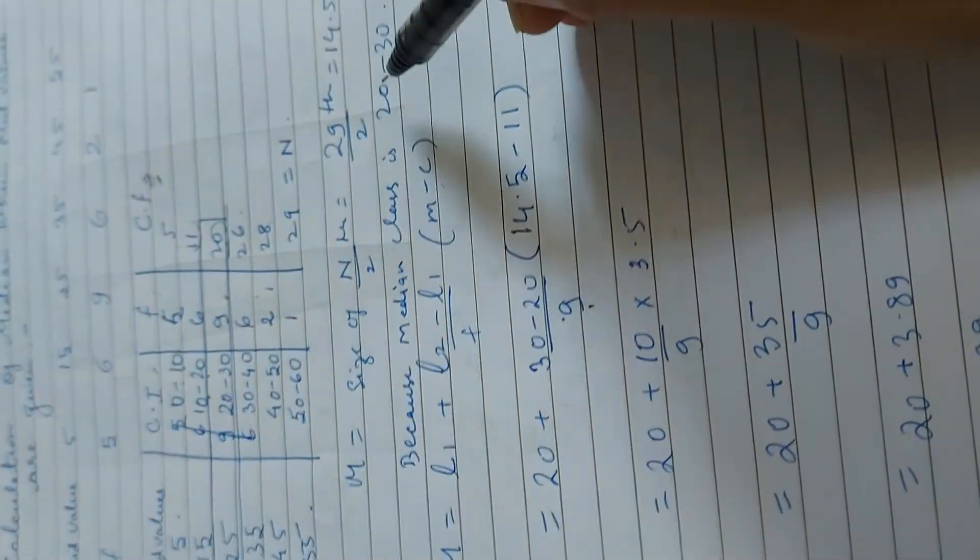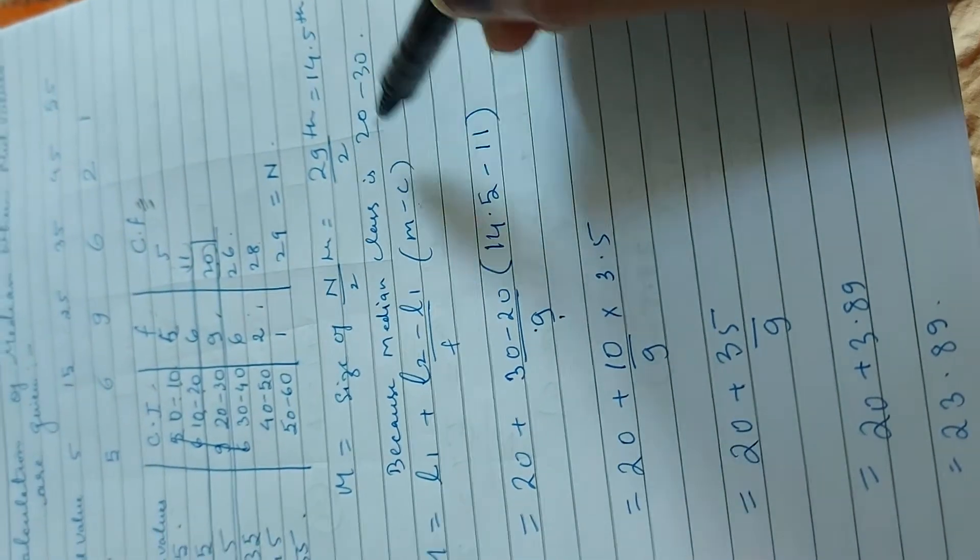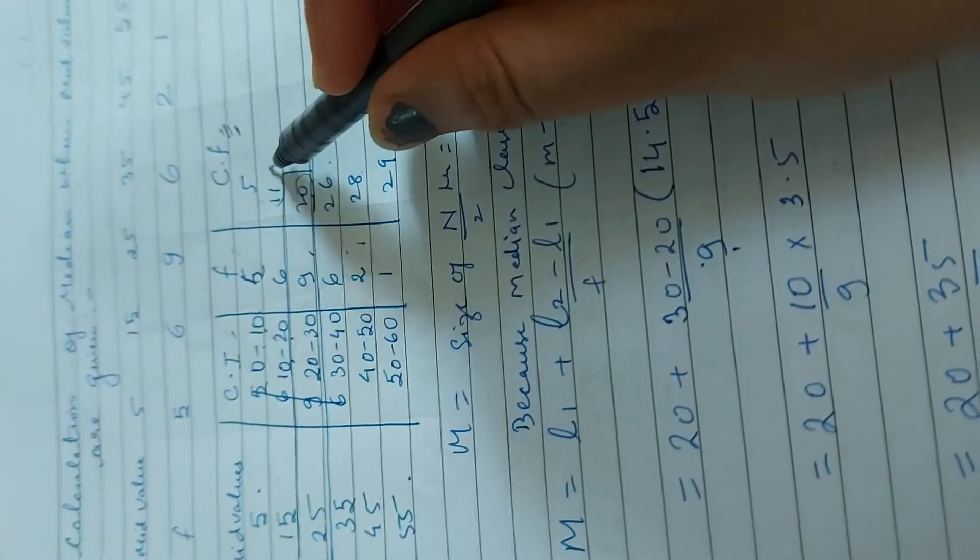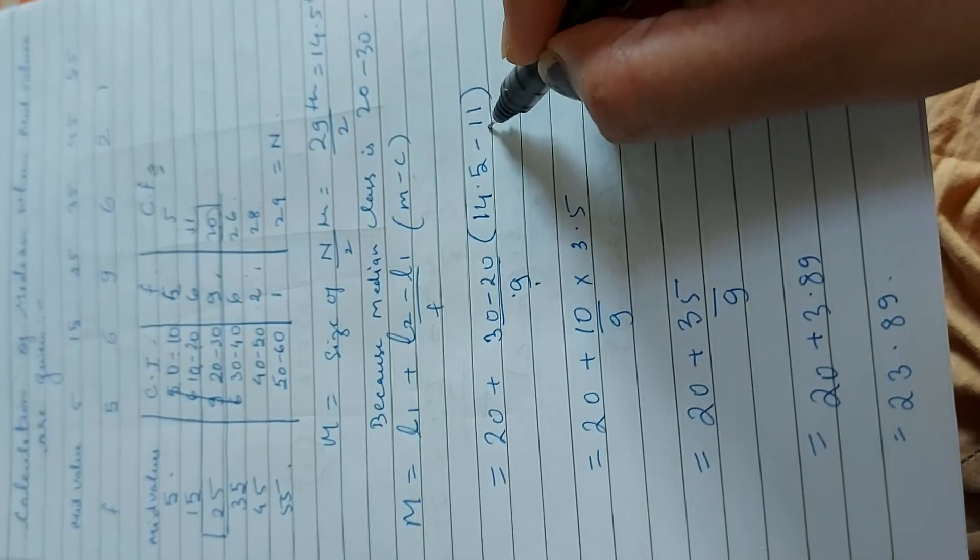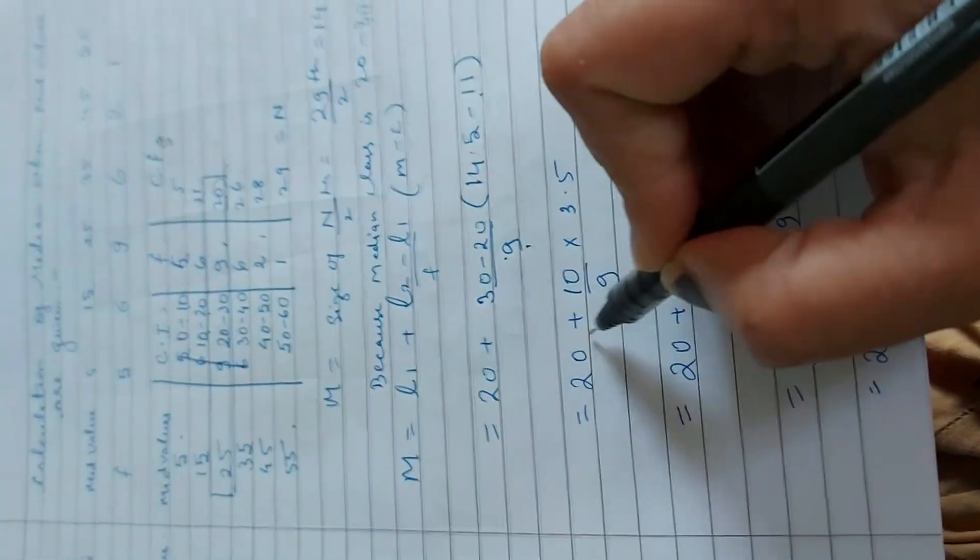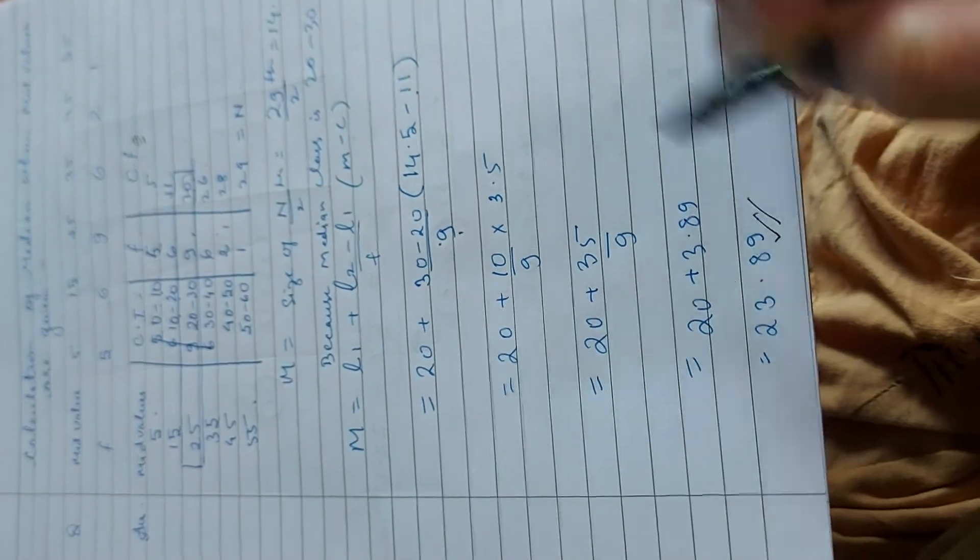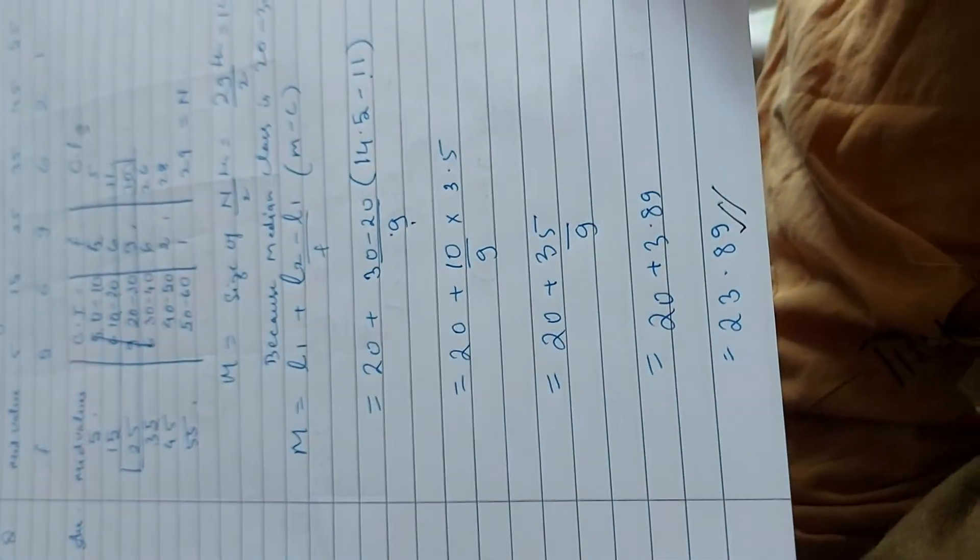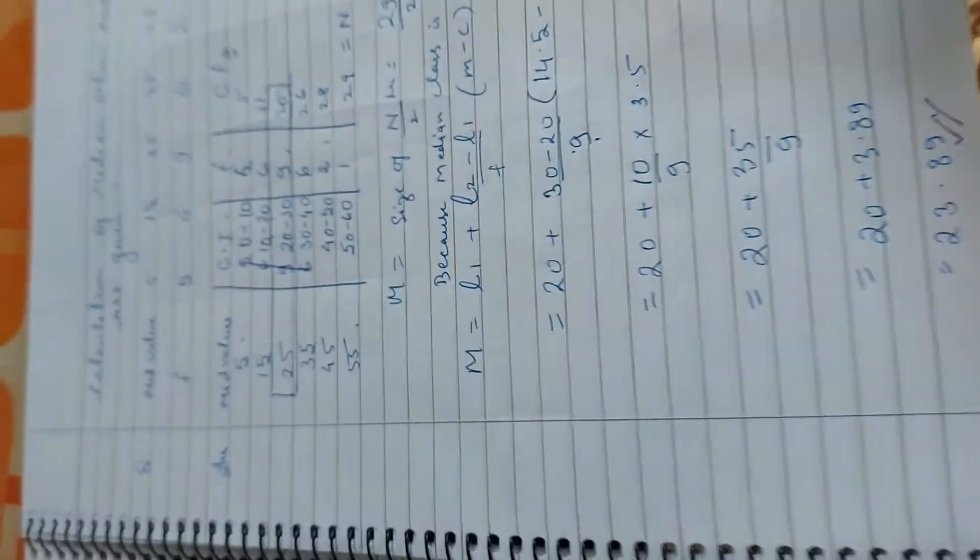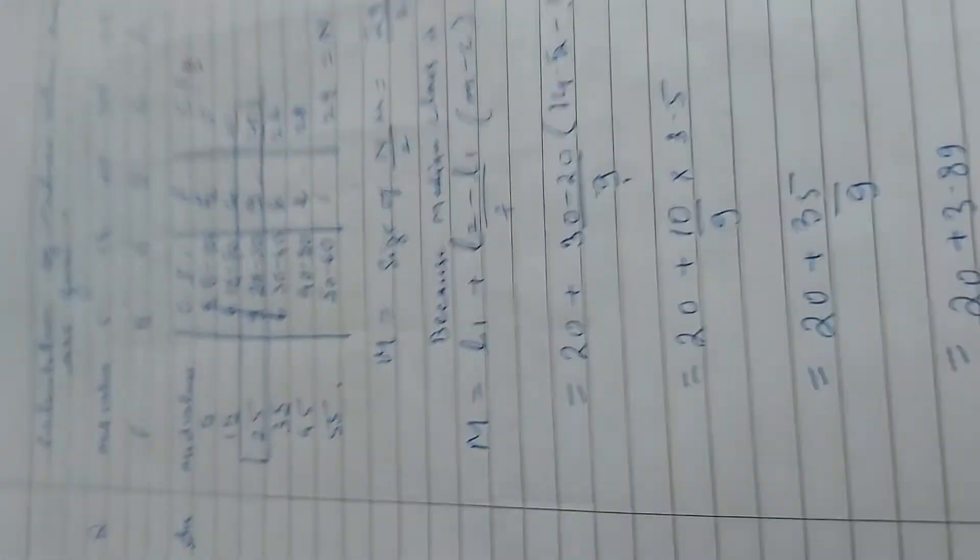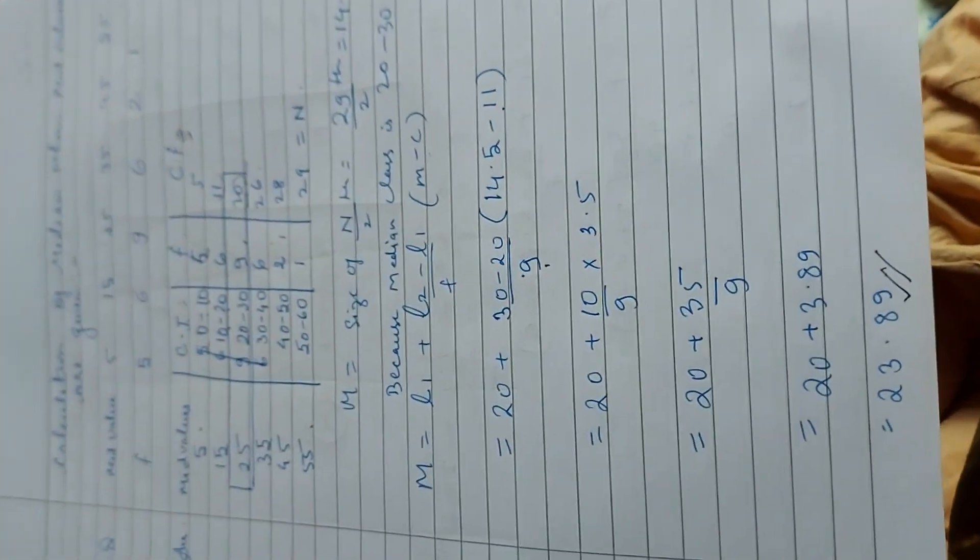M ho gaya this 14.5 and just uske upar ho gaya 11, that is your subtraction cumulative frequency. Ab jab hum calculate karenge, so answer will be 23.89. So ye bhi bahut easy question hai. Hope you people have understood. Thank you students.